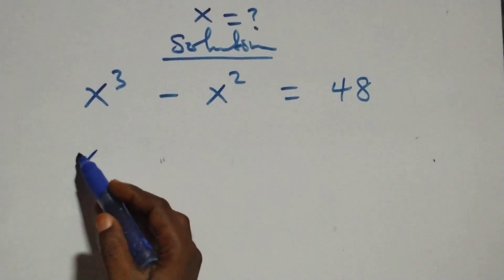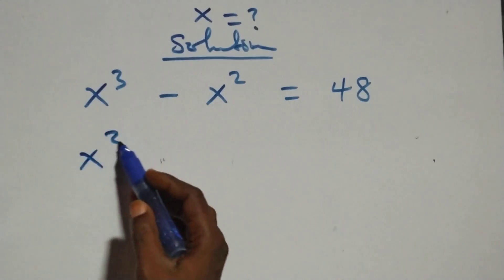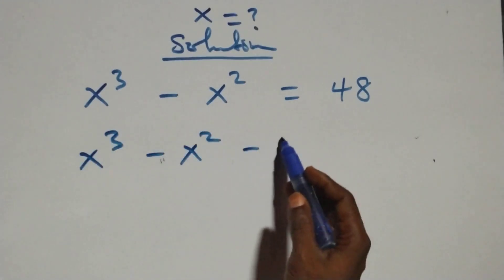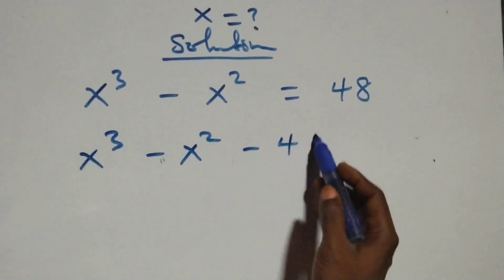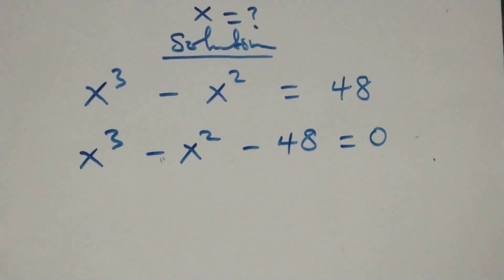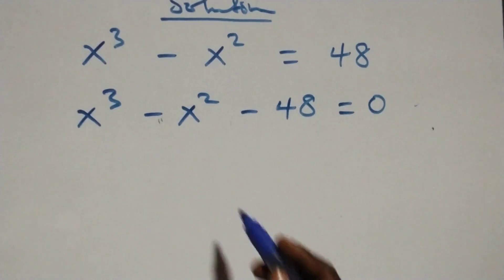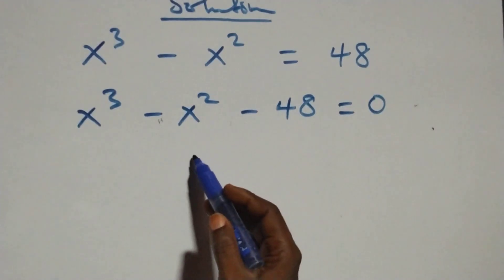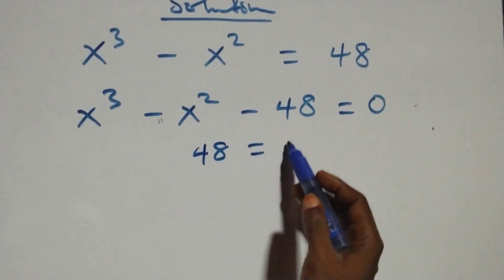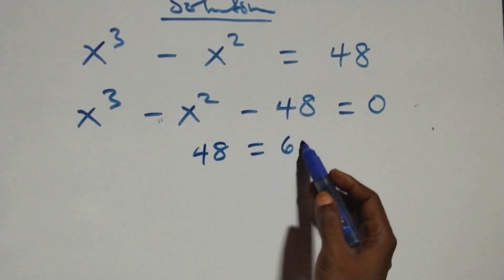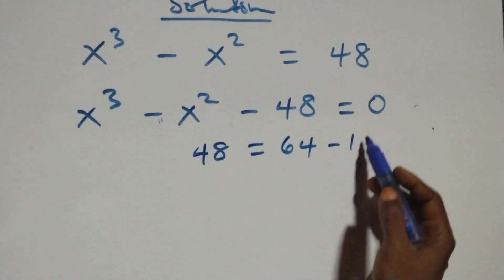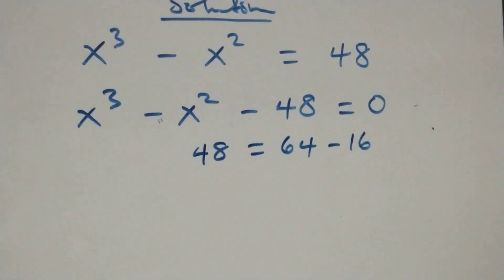The next step: we take 48 to the left hand side, and we have x raised to the power 3 minus x raised to the power 2 minus 48 equals to 0. Here we can express 48 as 64 minus 16.